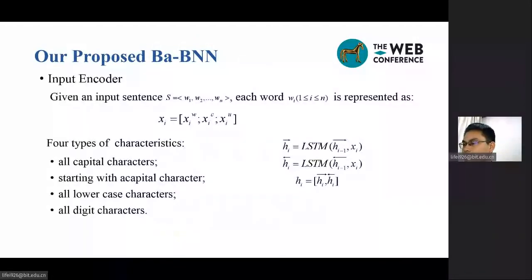Given an input sequence as a pre-trained word embedding, a character-level word embedding, and the word feature embedding concatenated as the word embedding, we consider the word feature with four types of characteristics: one, all capital characters; two, starting with a capital character; three, all lower case characters; and four, all digit characters.